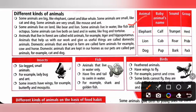Some animals are small like cat and dog. Some animals are very small like mouse and ant. Some animals live on land like bear and lion. Some animals live in water like fish and octopus. Some animals can live both on land and in water like frog and tortoise.